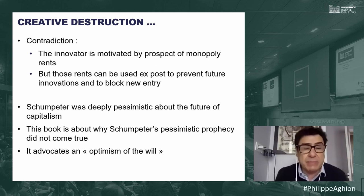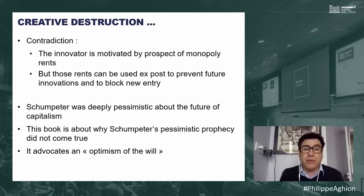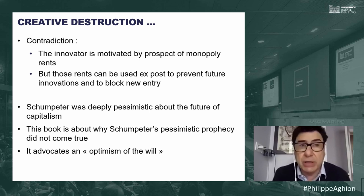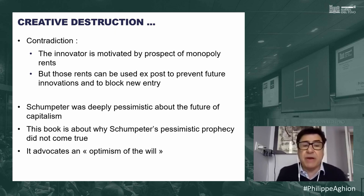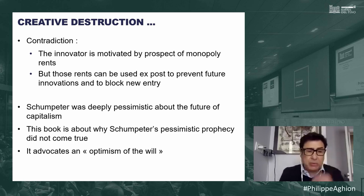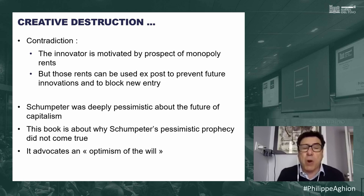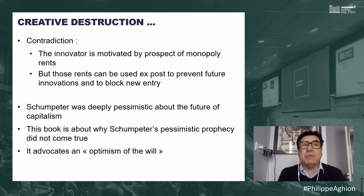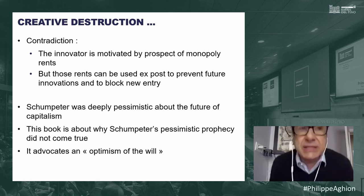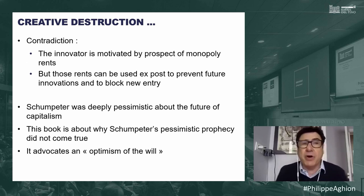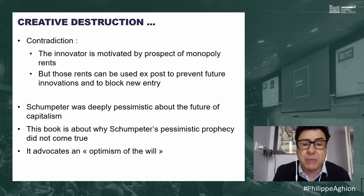Schumpeter was pessimistic about capitalism's future. He thought the first innovators would turn into entrenched conglomerates that would successfully prevent subsequent innovation. But in this book we are much less pessimistic — we believe there are forces that can be activated to avert that prediction. We are what I'd call Gramscian optimists: not optimists who believe things will fall into place automatically, but who believe you have to fight, with optimism of the will.